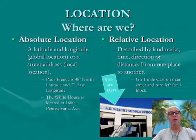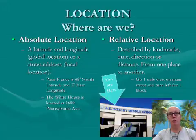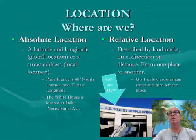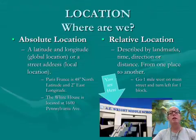A Right Middle School is an absolute location — it can be pinpointed on the map. If we're talking about it in a relative location sense, we could say: if you get off on Las Virgenes and go down the road, you will hit A Right Middle School.